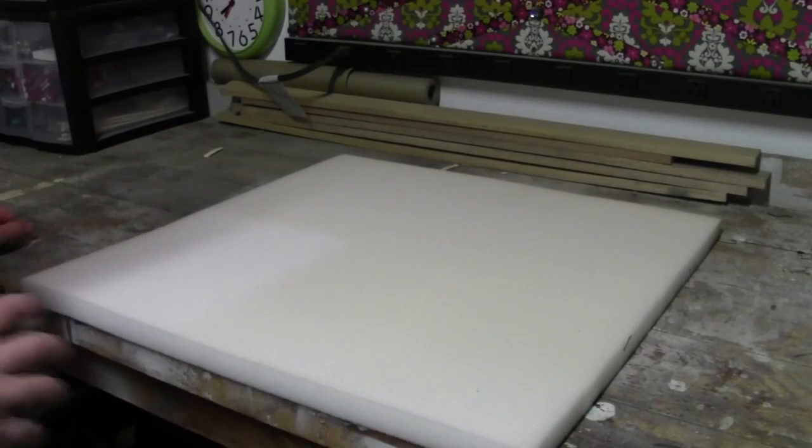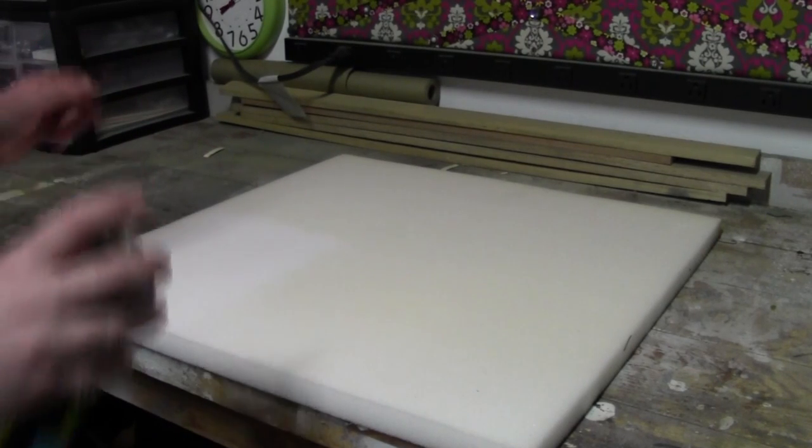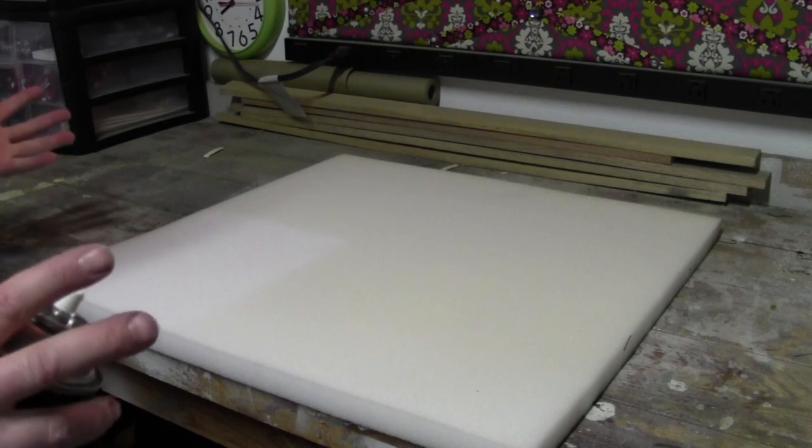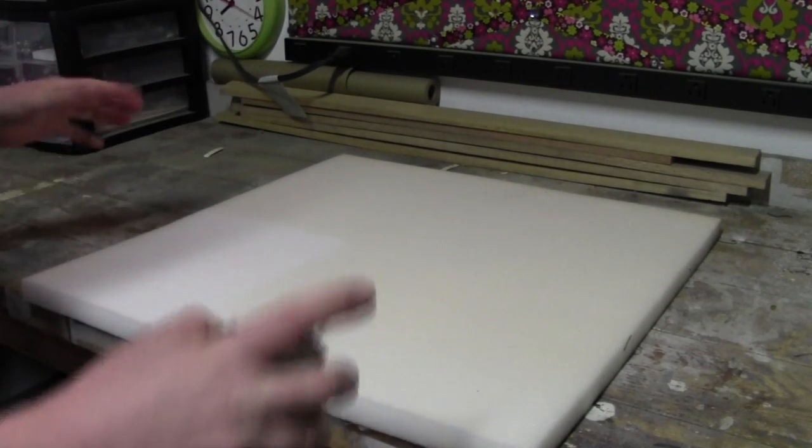So that's what we're going to do now. We're going to put down our contact adhesive and start sticking these two pieces on here. I'll also want to note, a contact adhesive means you have to spray both sides of whatever you're trying to bond. Let them essentially dry, and then the bond happens when the two pieces contact, hence the name.